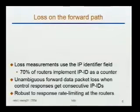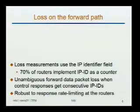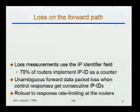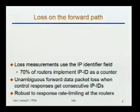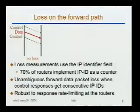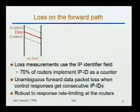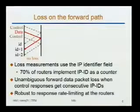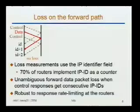If you pay attention to one slide in this talk, this is the one — measuring loss on the forward path without being confused by the reverse path. We use the IP identifier field. The IP ID field is a special field in IP packets, originally for enabling fragmentation and detection of unique packets. In most routers and end hosts, the IP ID is implemented as a counter. We send three probes to a router: the first and third are control probes, the middle one is the data probe. I'm interested in measuring loss of the data probe only. If there are no losses in any direction, I get back consecutive IP IDs — ID, ID+1, ID+2 — from the router.